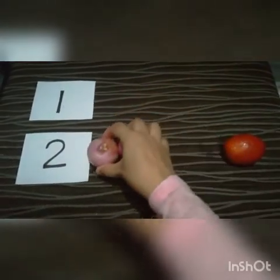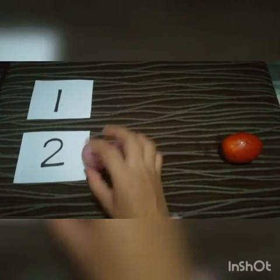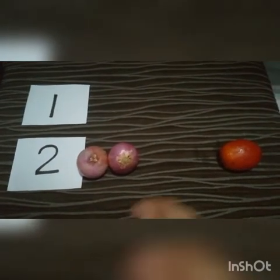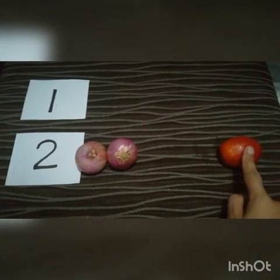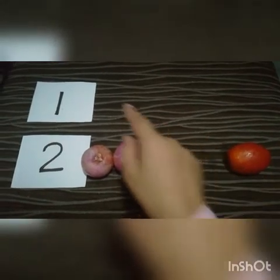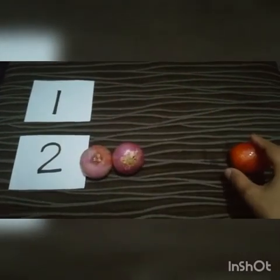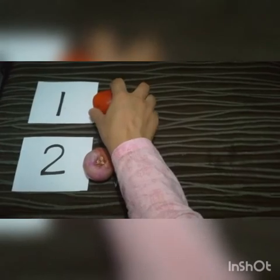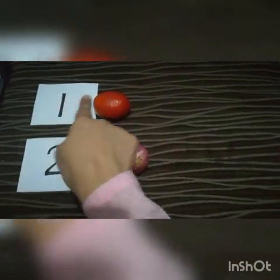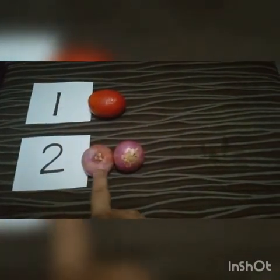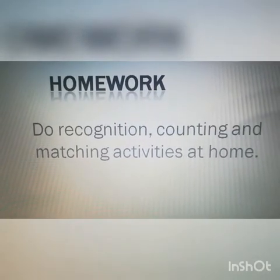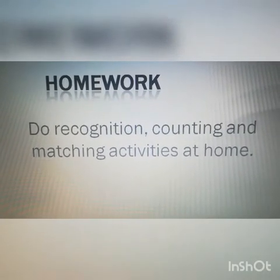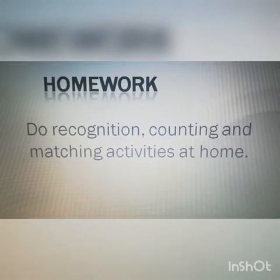Match the two onions to the number two. Now it's a tomato — how many tomatoes are there? One tomato. Where is one on these cards? Here it is — match one tomato to the number one. One tomato, two onions. Your homework is to do the recognition, counting, and matching activity.